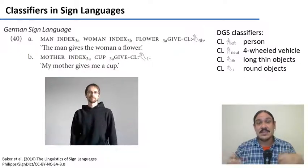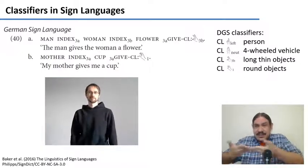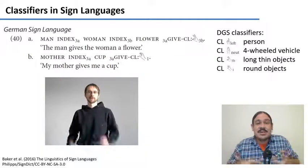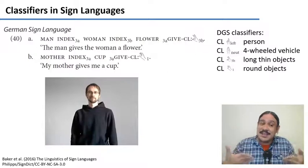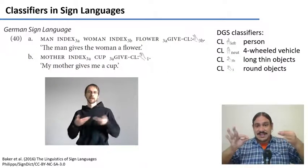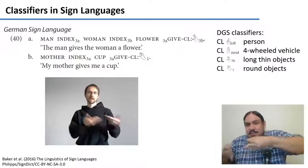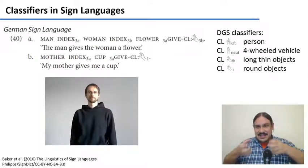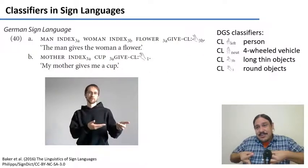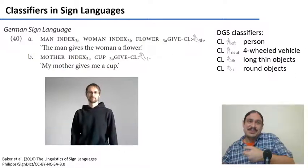Another verb that does this is the verb 'to give'. The dictionary form of 'to give' is like this. But you can modify the hand shape with a classifier to give an idea of the shape of the thing you're giving. For example, with your fingers like this, this is the giving of a long, thin object. With your fingers like this, it's the giving of a round object. So you can give a long, thin object like a flower, or a round object like a cup.